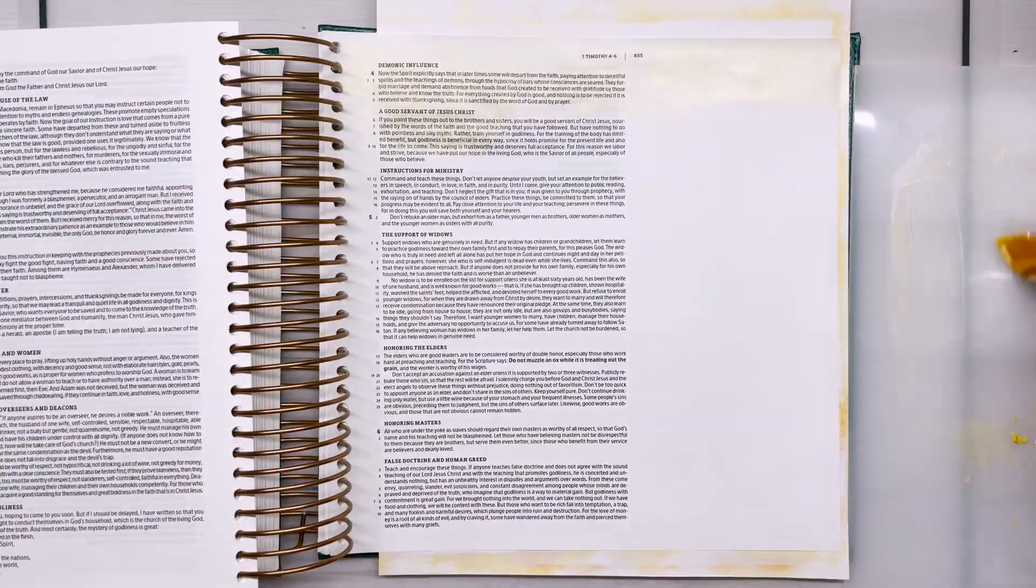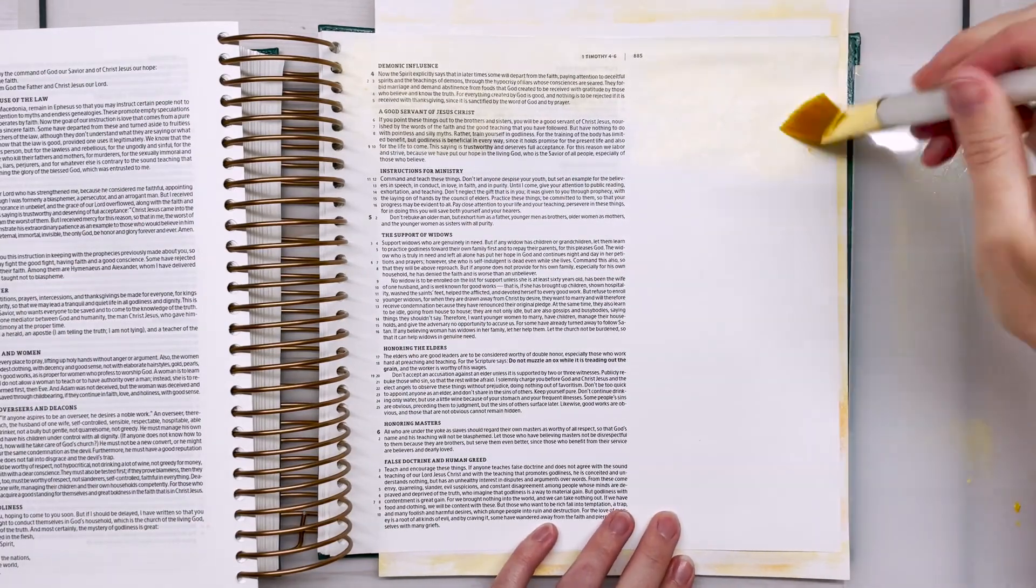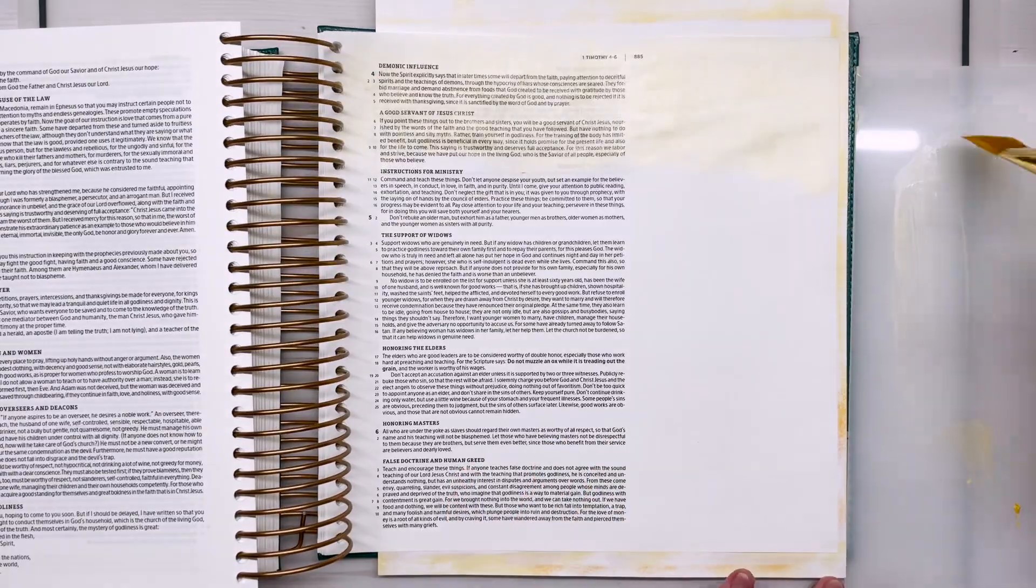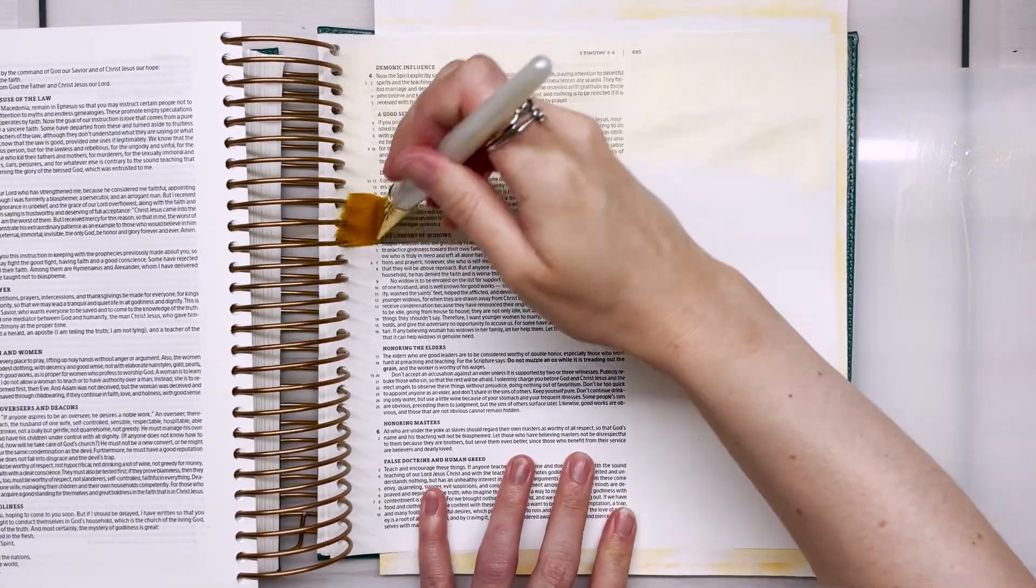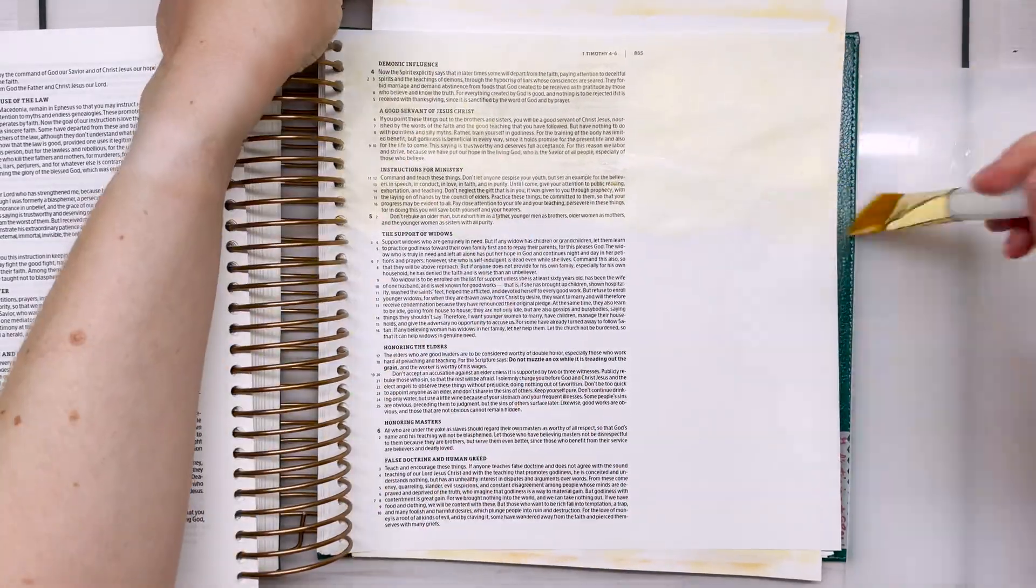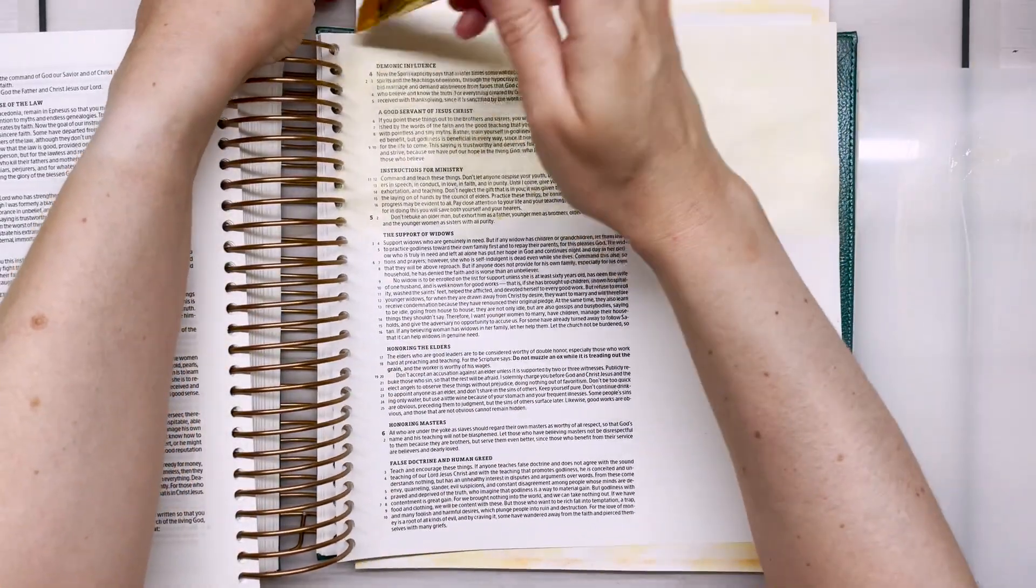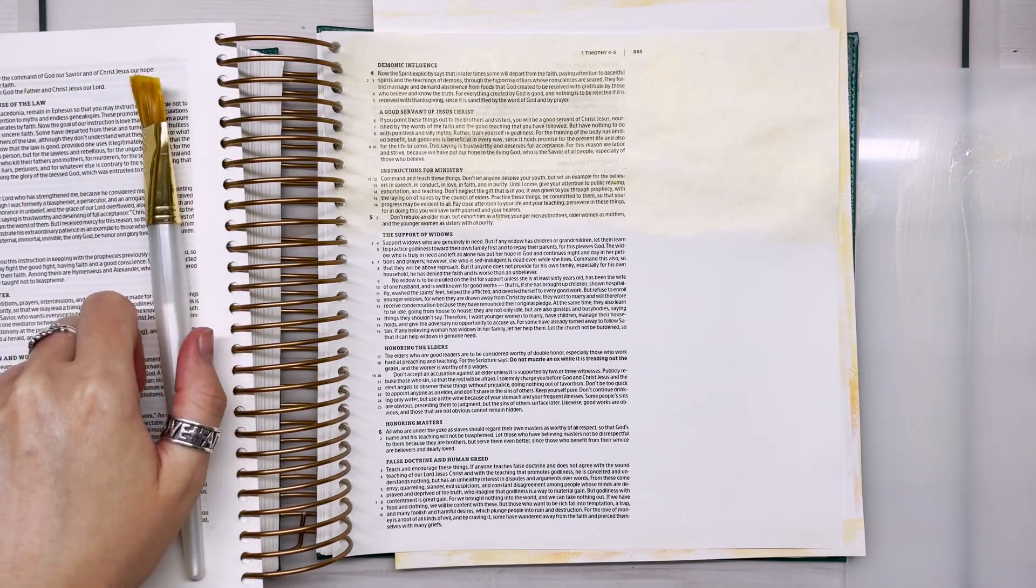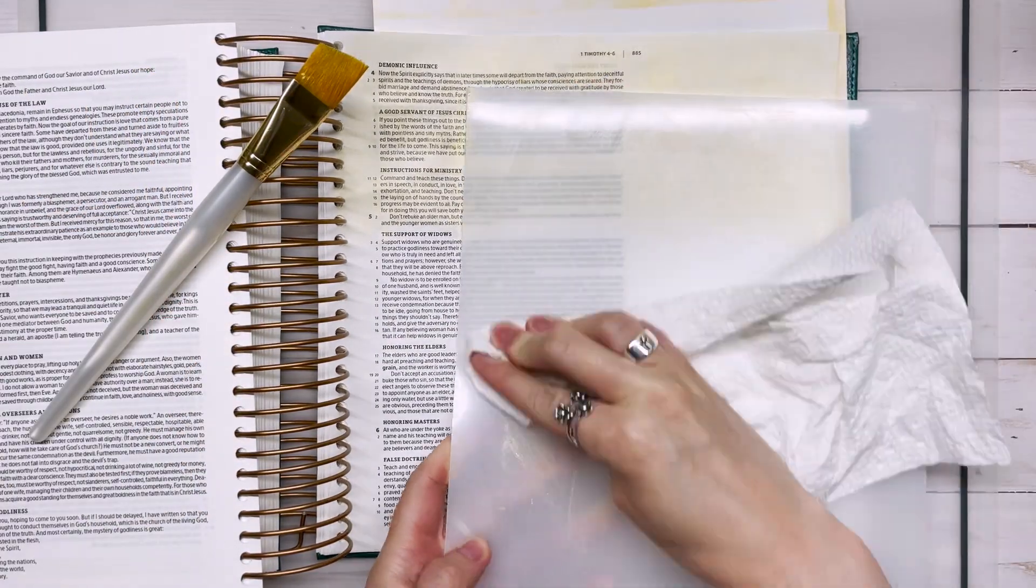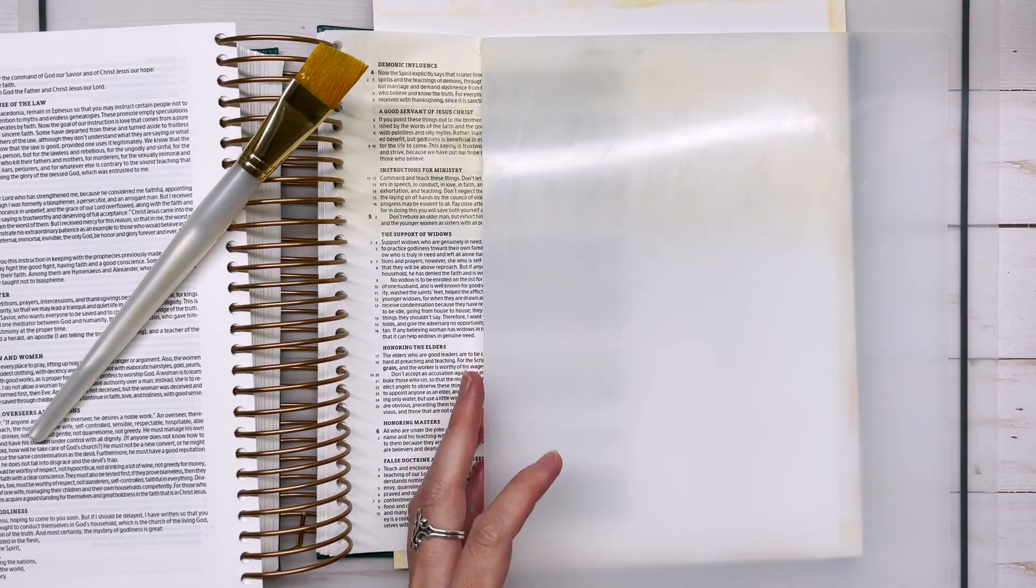And I should note, this is the illustrating Bible. So I did not prep the page at all with anything since the pages in the illustrating Bible are thicker. But if you're using a normal journaling Bible that has really thin pages, you might want to prep it with gesso first. And I'll link to that video in case you need it. But the illustrating Bible does really well without any prep.